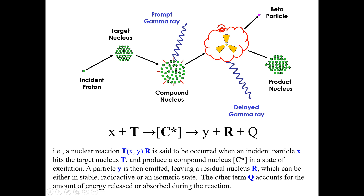Along with the compound nucleus, other particles and some radiation are produced. The particle Y represents the emitted particle. When a nuclear reaction occurs, particle Y is emitted, leaving a residual nucleus R, which can either be unstable or radioactive, and some isomeric states.